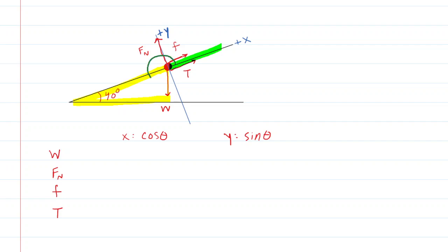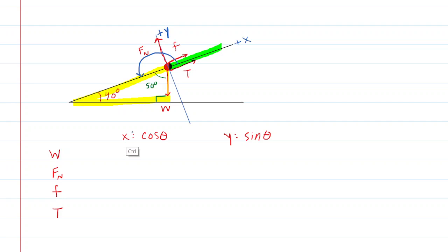We're going to need that angle in order to find the x and y components. We have a yellow right triangle highlighted. This angle is 90 degrees, and the sum of angles in a triangle is 180, so this angle has to be 50 degrees, because 50 plus 40 plus 90 gives us 180. The angle from the positive x-axis all the way to the W force: from positive to negative x-axis is 180, but you'd add 50 more to get to the weight force. So 180 plus 50 is 230 degrees. You multiply the weight by cosine of 230 to get the x component, and by sine of 230 to get the y component.